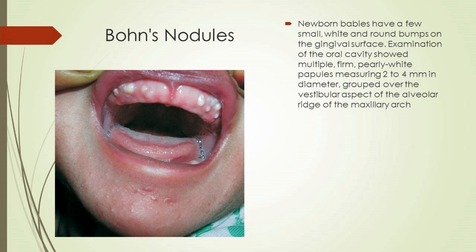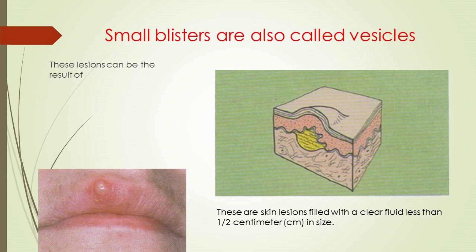Examination of the oral cavity showed multiple firm pearly white papules measuring 2 to 4 mm in diameter, grouped over the vestibular aspect of the alveolar ridge of the maxillary arch. Two similar lesions were seen on the mandibular area. These lesions were asymptomatic, non-tender, and fixed to the mucosa. No specific therapy was prescribed; within a couple of months most of the lesions subsided spontaneously. A diagnosis of Bohn's nodule was made.